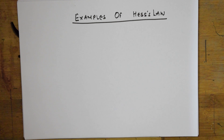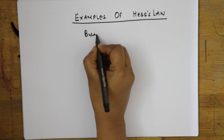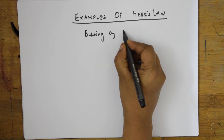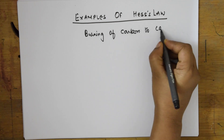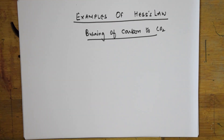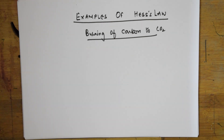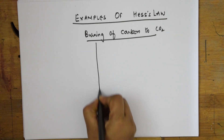Today we are going to see examples of Hess's Law. Let us take the most famous example: burning of carbon to carbon dioxide, which is the combustion of carbon. We will take both pathways and compare them.